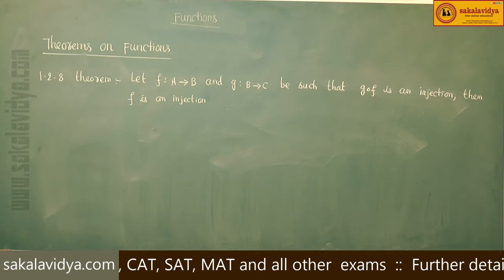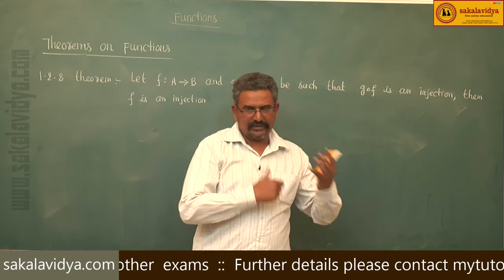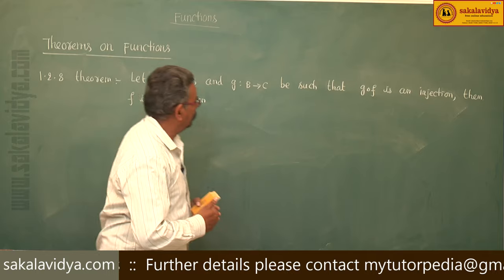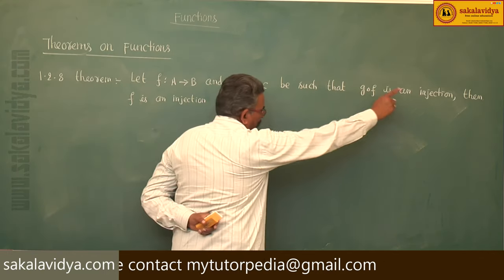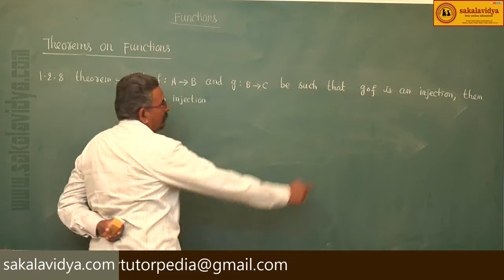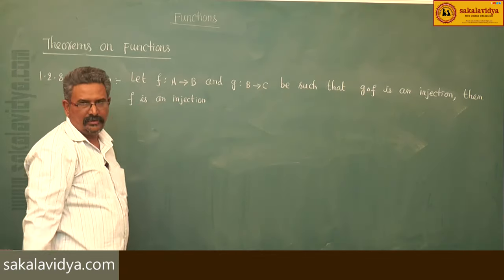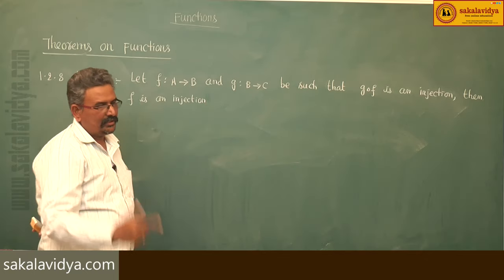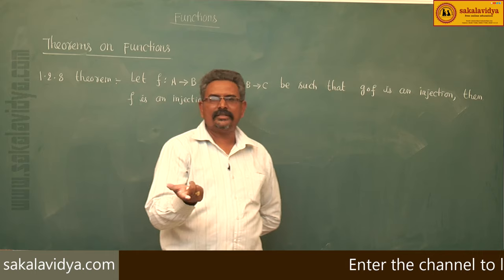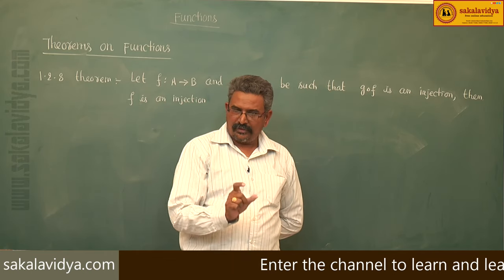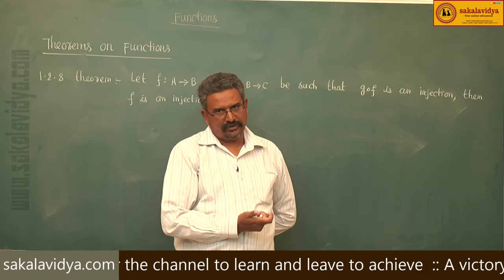We have to prove that f is an injection function. Given that g circle f is an injection, using this condition, let us prove that f is an injection. f is an injection means it is enough to prove that if f of a1 is equal to f of a2, then we have to deduce that a1 is equal to a2.